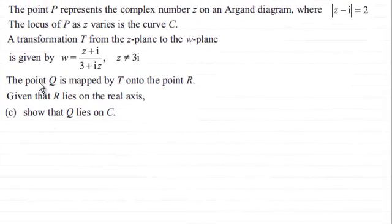Hi there. Now in this question, we're given that the point P represents the complex number Z on an Argand diagram, where the modulus of Z minus i equals 2, and the locus of P as Z varies is the curve C.